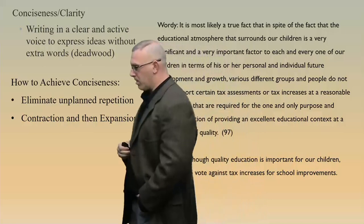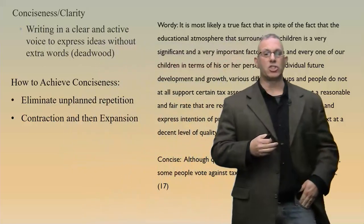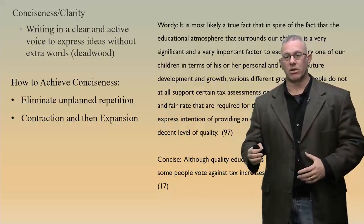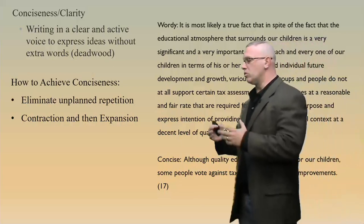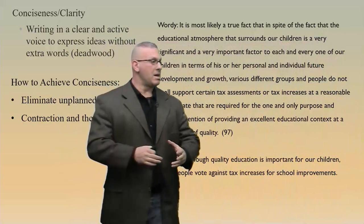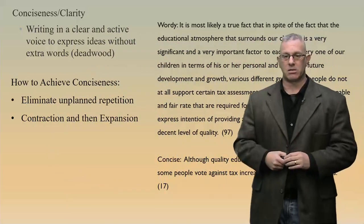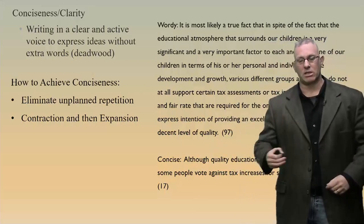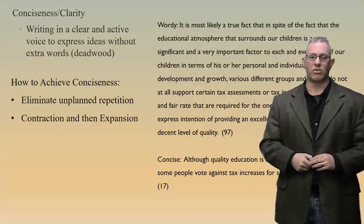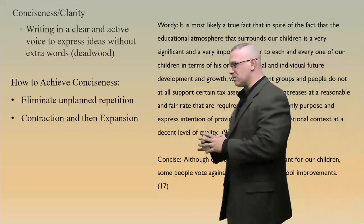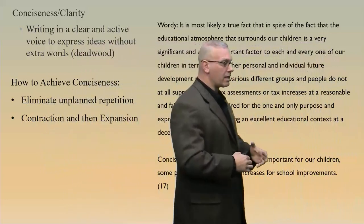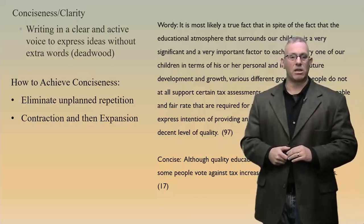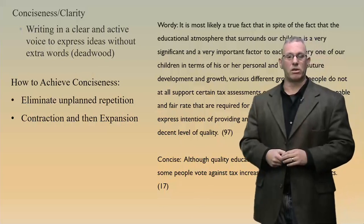How to achieve conciseness: eliminate unplanned repetition — contraction, then expansion. Often we write like the way we talk, wandering and throwing in extra language. Contraction means cutting out the extra words, pairing them down. Maybe you even produce a paper of all simple sentences — clear and concise. Then you expand: add coordinating conjunctions, subordinating conjunctions, commas, semicolons, transitional phrases. Contract words, sentences, and expressions down; make sure they are clear and concise; then build them back up. It's difficult only insofar as it is a function of time — how much time are you willing to spend achieving those goals?